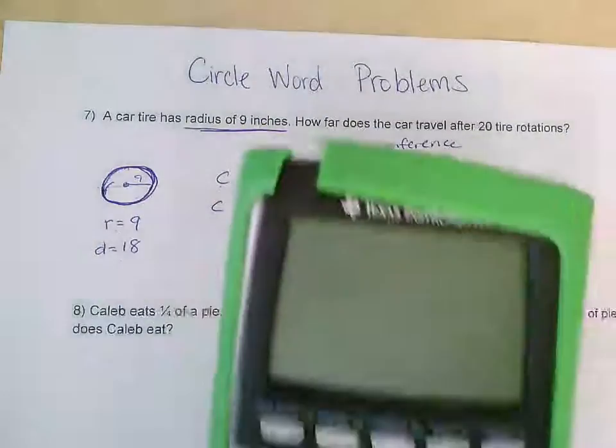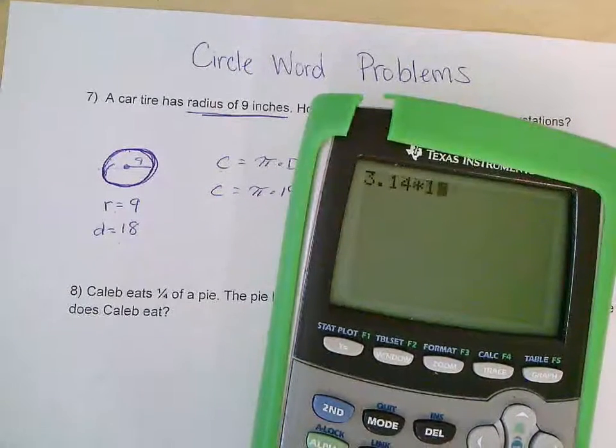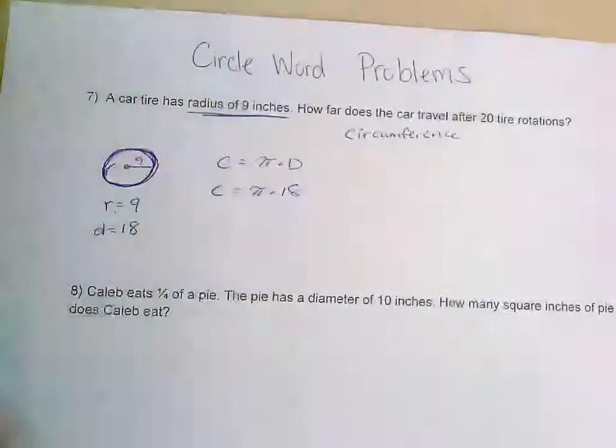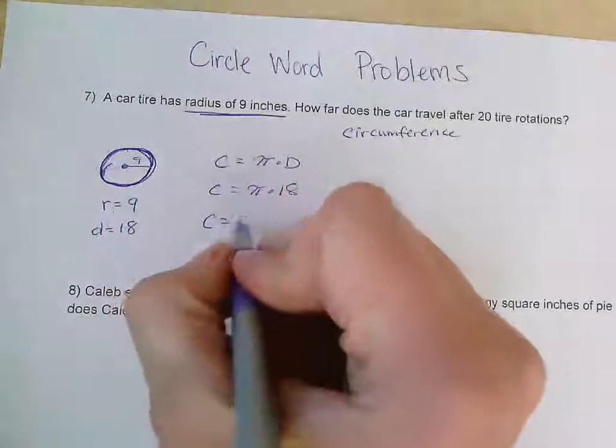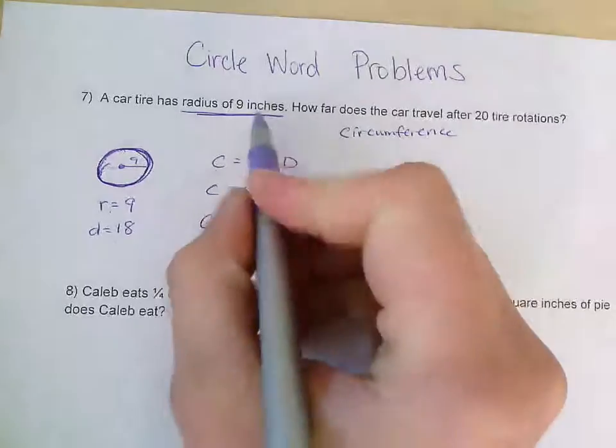And now I'm going to plug that in on my calculator. So I have circumference equals pi times 18 and I get 56.52. So right now I know that the circumference equals 56.52 and I'll label as inches.